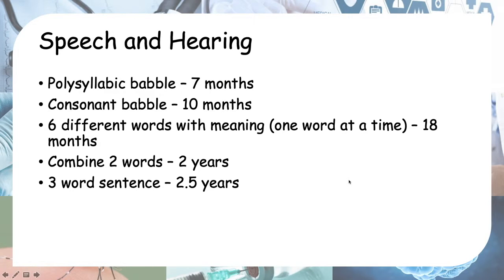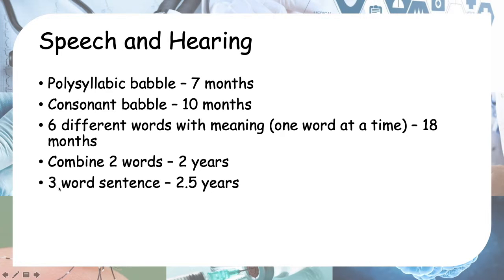Next is speech and hearing. I remember five milestones. The first is polysyllabic babble — things like 'mama' or 'papa', two syllables. Second is consonant babble — consonants are anything other than vowels, like 'm' and 'n'. Third is six different words with meaning, one word at a time. Fourth, combining two words. Fifth, three-word sentences.